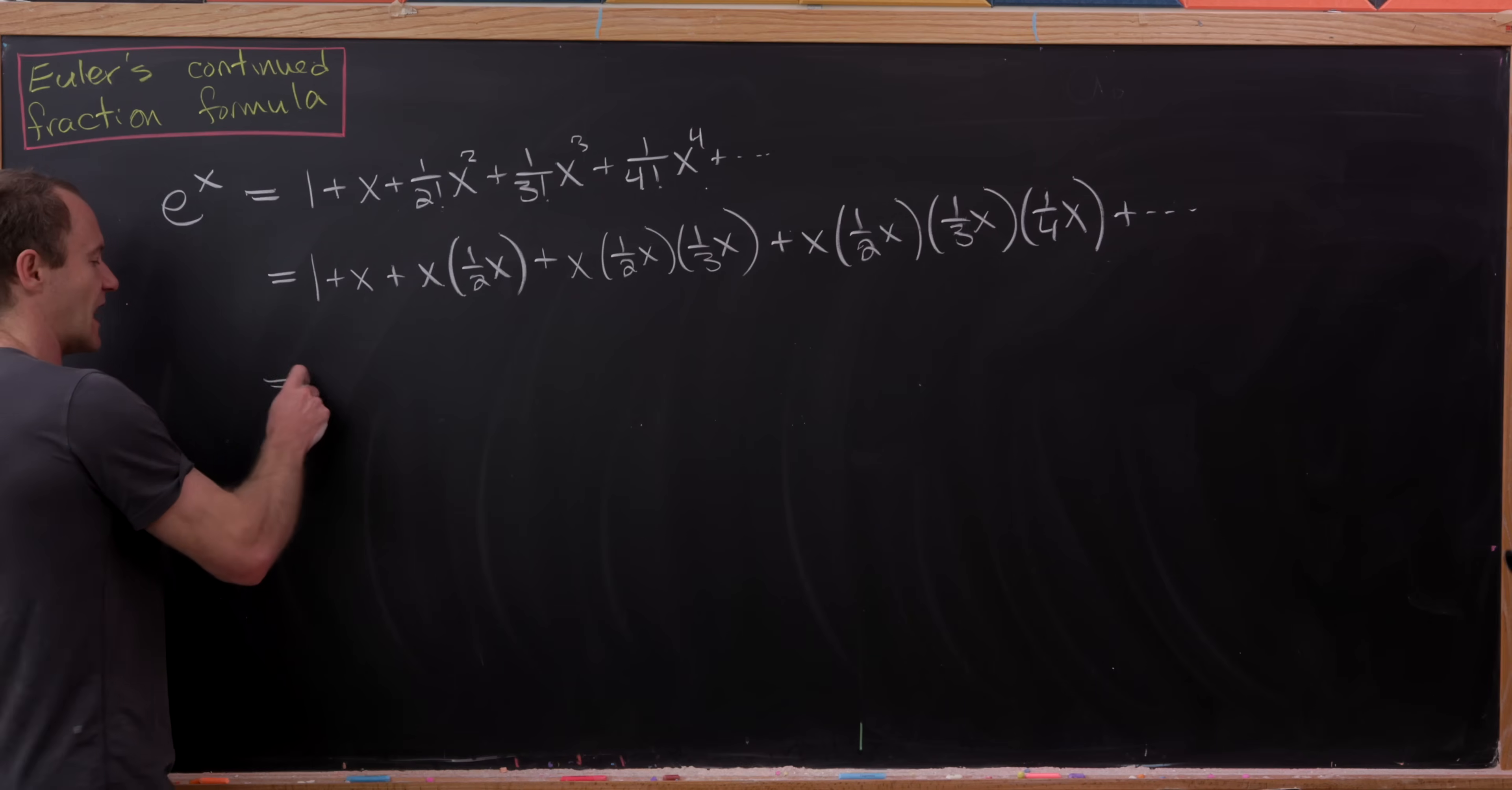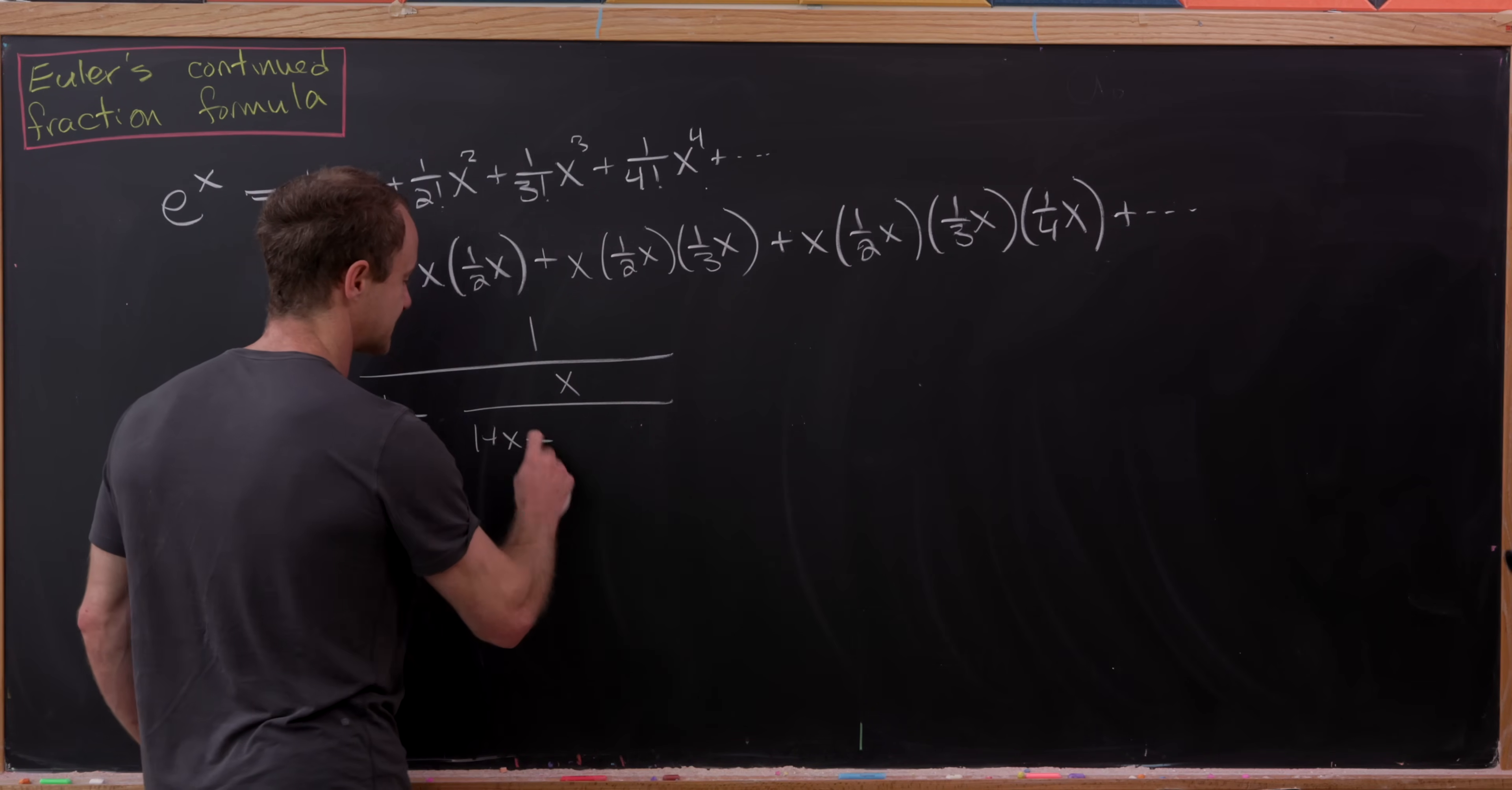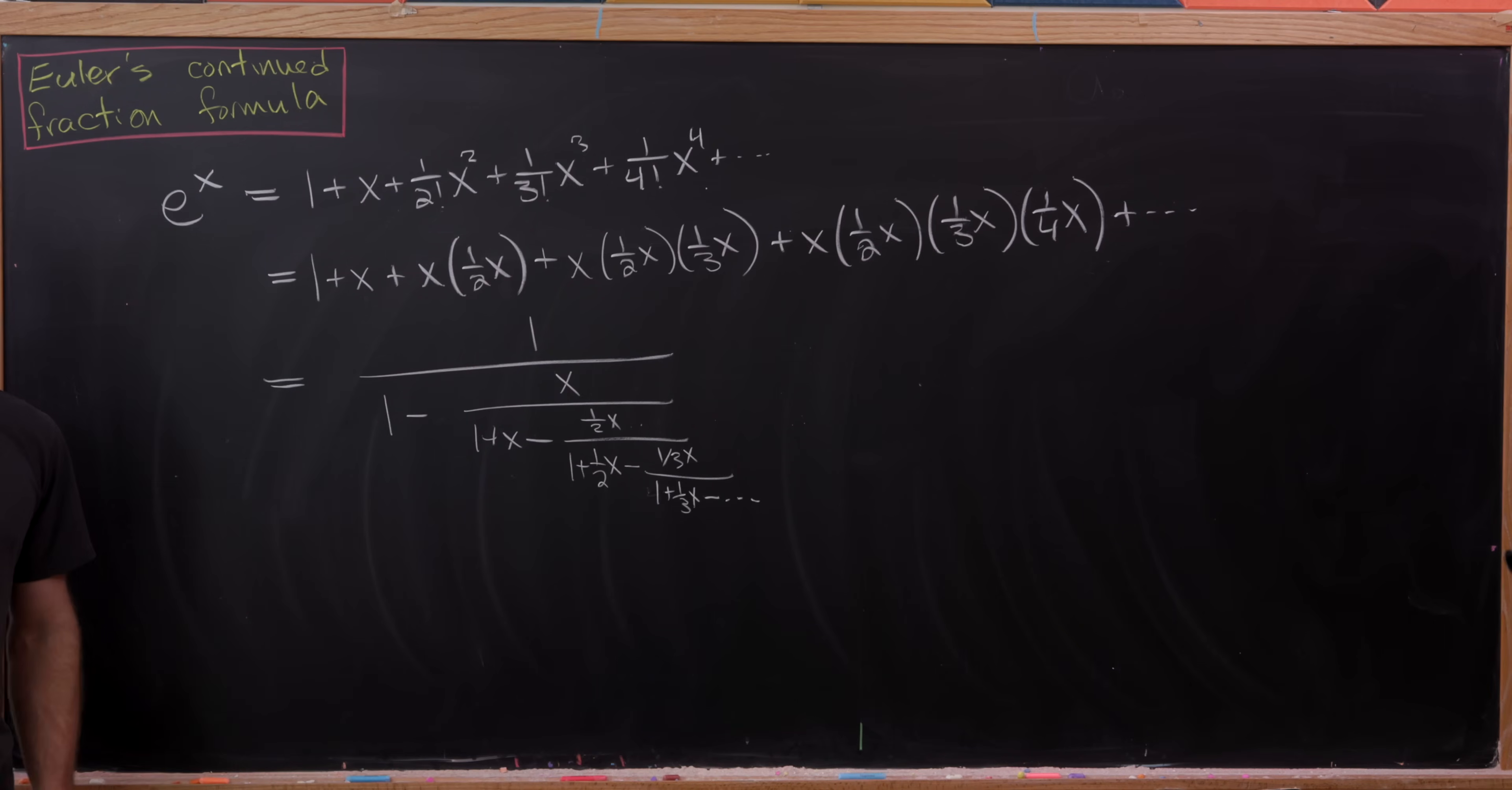So now let's apply the rule that we had to rewrite this as our continued fraction. So we've got 1 over, so we'll have 1 minus x over, and then 1 plus x minus 1 half x over, 1 plus 1 half x minus 1 third x over, 1 plus 1 third x minus, so on and so forth. So I think you can see the pattern there.